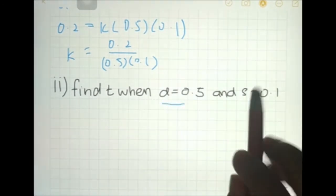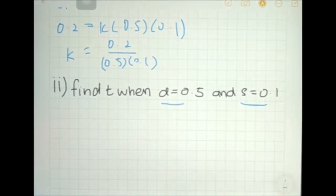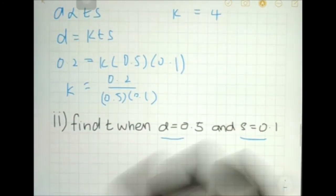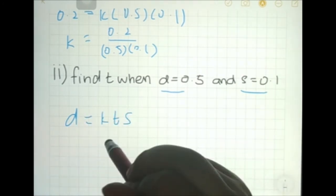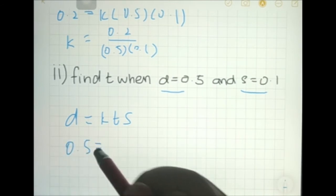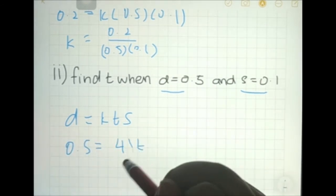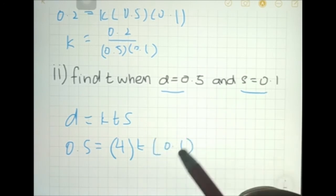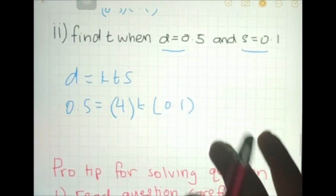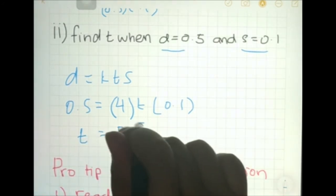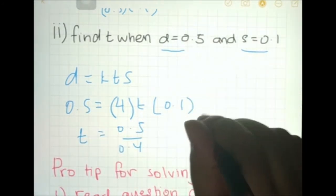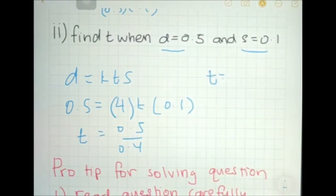Find t when d is 0.5 and s is 0.1. Since we found k equals 4, substitute into d equals 4ts. So 0.5 equals 4 times t times 0.1, giving 0.5 equals 0.4t. Therefore t equals 0.5 divided by 0.4, so t equals 1.25.